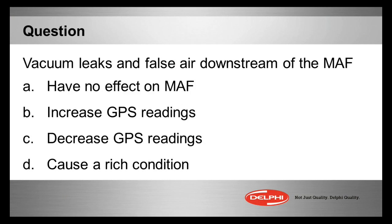A: have no effect on the mass air flow. B: increase the grams per second GPS readings. C: decrease the GPS readings. D: cause a rich condition.